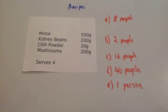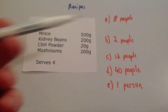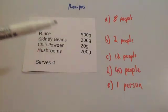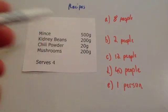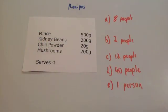But what if you don't want it for four people? What if you want it for eight people, two people, twelve people, forty people, one person, and so on? It's really useful to be able to scale up or scale down the amount of each ingredient to make sure you've got the right amount.